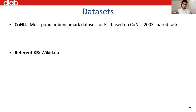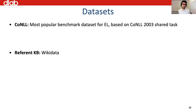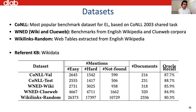For empirical analysis, we use the most popular benchmark dataset for entity linking: CoNLL, based on the CoNLL 2003 shared task — though it's an old and somewhat broken dataset. The reference knowledge base is Wikidata, which is a superset of all available knowledge bases and had around 65 million entities at time of experiments, now around 95 million. We also looked into other datasets from the entity linking literature to make the evaluation more robust.